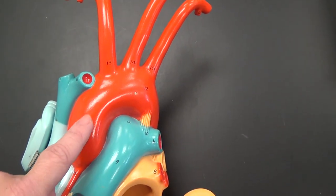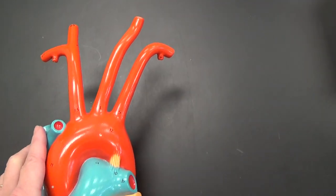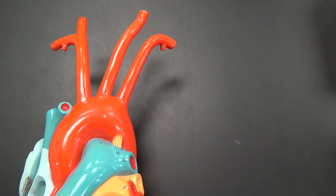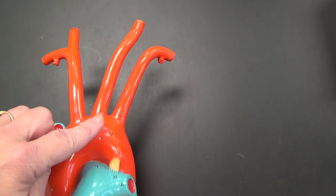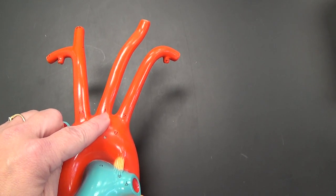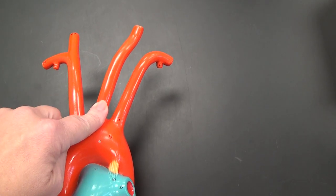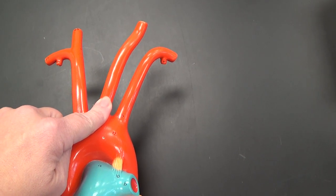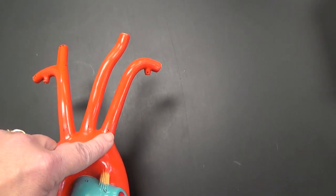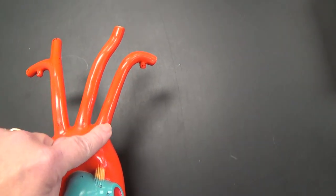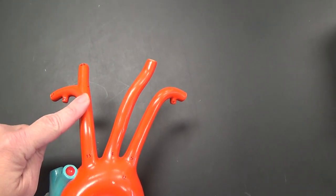The second part of the aorta is the arch of the aorta, which we see up here. There's three major blood vessels coming off of this arch. We have the brachiocephalic artery here. The second is the left common carotid artery. It's common for a very important reason, and we'll look at that as we move into a torso model later on. And we have the left subclavian artery here.